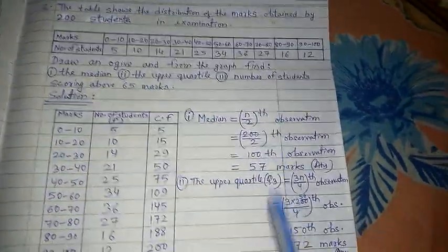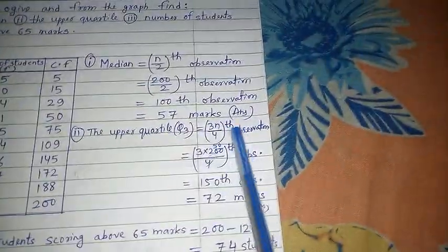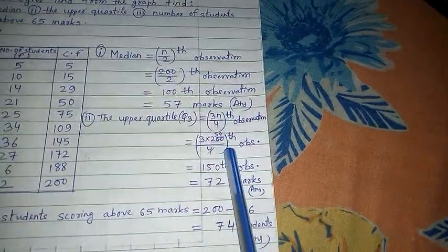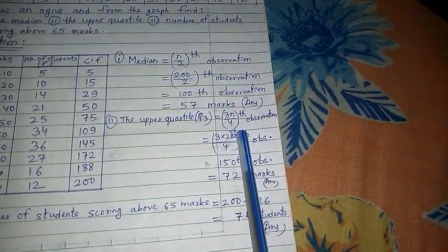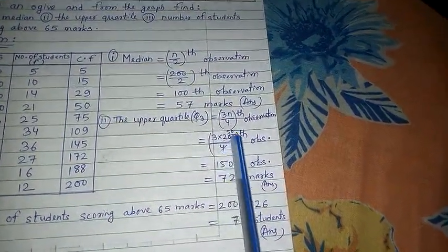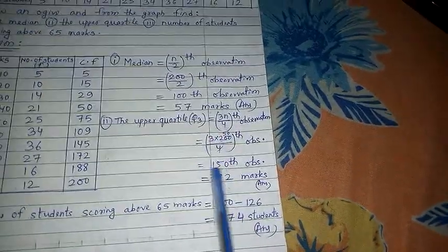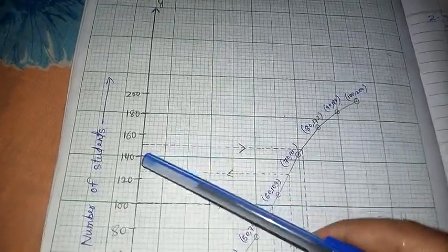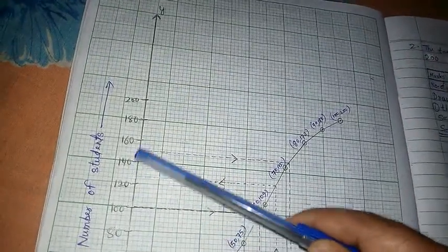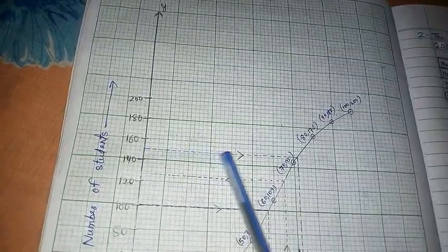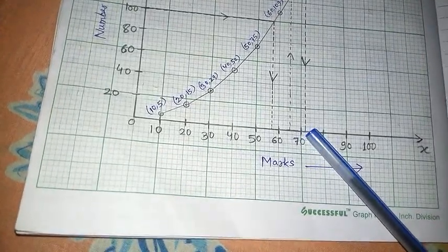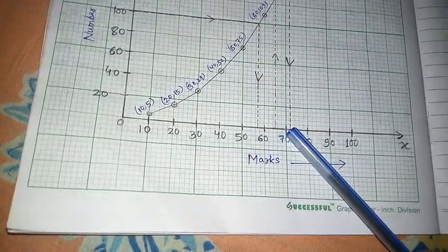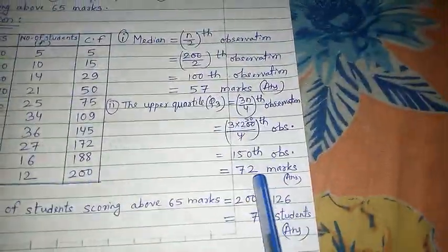Second question is the upper quartile. Upper quartile is 3N by 4 th observation. N is 200, so 3 times 200 by 4 is 150, the 150th observation. 150 will fall between 140 and 160. That's why 2 and a half up, it goes here and falls here. It has fallen on the first line of 70, that means 70, this is 72. My answer will be 72 marks.